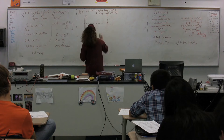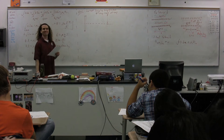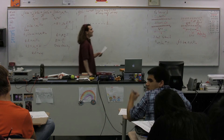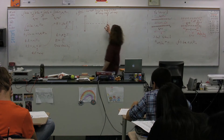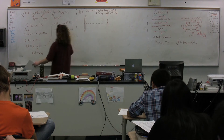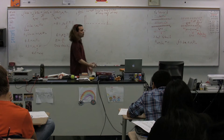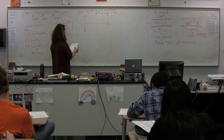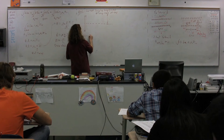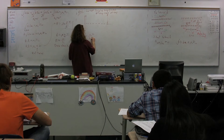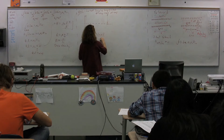We need to use Biot-Savart. The reason we cannot use Ampere's law is because we can't find an Amperian loop that will have this point on it where the magnetic field is going to be constant and the angle is going to be 0 or 90 degrees. You just can't find it. So we need to use Biot-Savart: dB equals mu-naught times I divided by 4π times the quantity dS cross unit-vector-R over R squared.